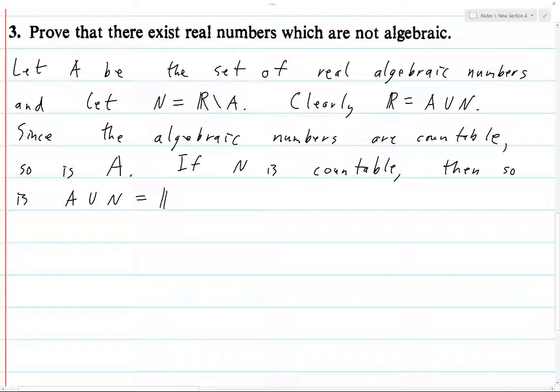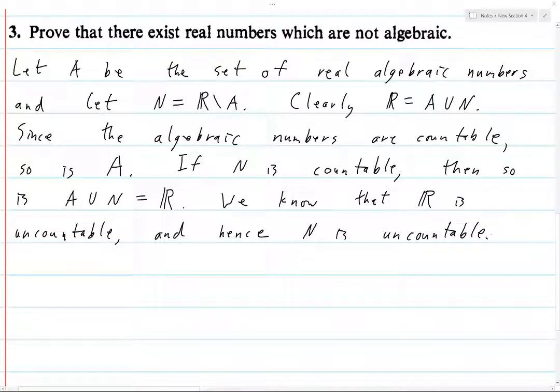But A union N, which is R. We know that R is not, or here, we'll say that R is uncountable. And hence, N is uncountable. Okay. And that finishes the proof.